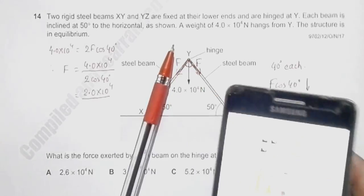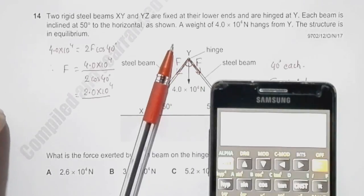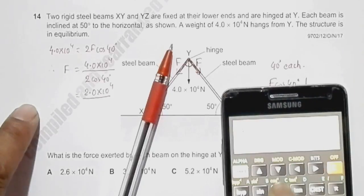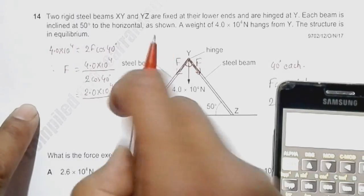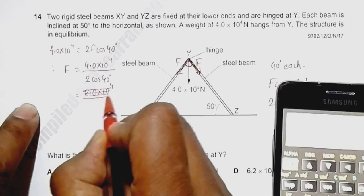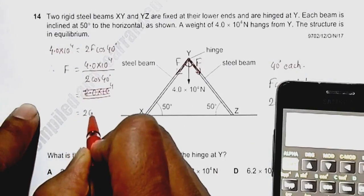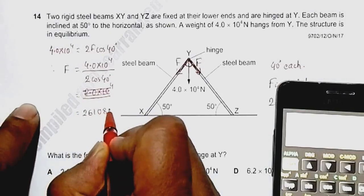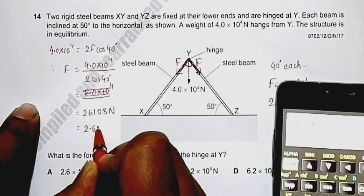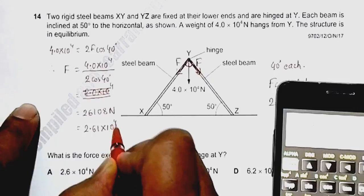So if I do it here: 2 × 10^4 divided by cos 40 equals 26,108 Newton, which is equal to 2.61 × 10^4 Newton.